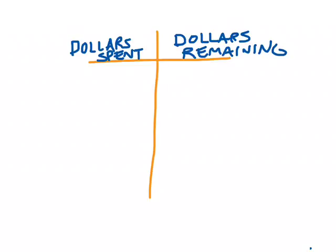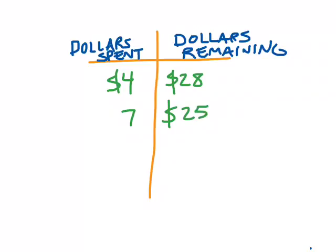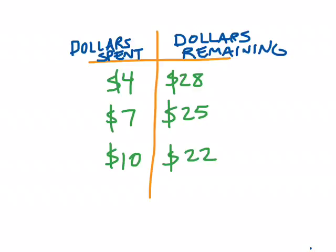Let's look at another example. Imagine that somebody goes out to the mall and starts spending money. We find out that if they had spent four dollars, they would have twenty-eight dollars remaining, and if they had spent seven dollars, they would have twenty-two dollars remaining. The thing that's missing seems to be how much money this person started with, because the amount I begin with will determine how much I have remaining after spending some.